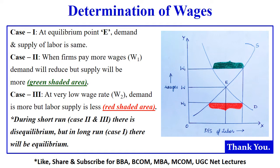In the short run, that is in Case 2 and Case 3, there will be disequilibrium — supply and demand will not be equal. But in the long run there will be a stable situation and it will reach the equilibrium point, that is Case 1. This is how we determine wages.